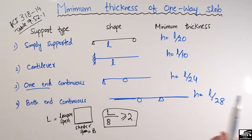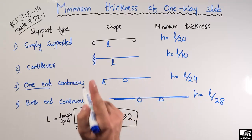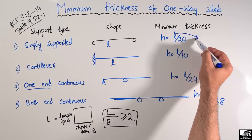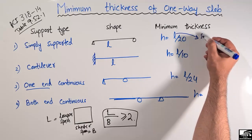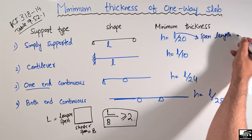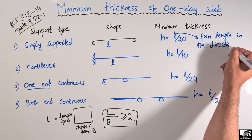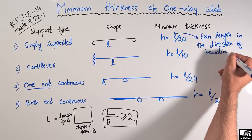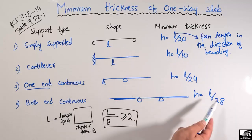It should also be kept in mind that L here is the span length in the direction of bending. This L is not the effective length or clear span, but it is the span length in the direction of bending. In all of these cases, L is the span length of the slab in the direction of bending.